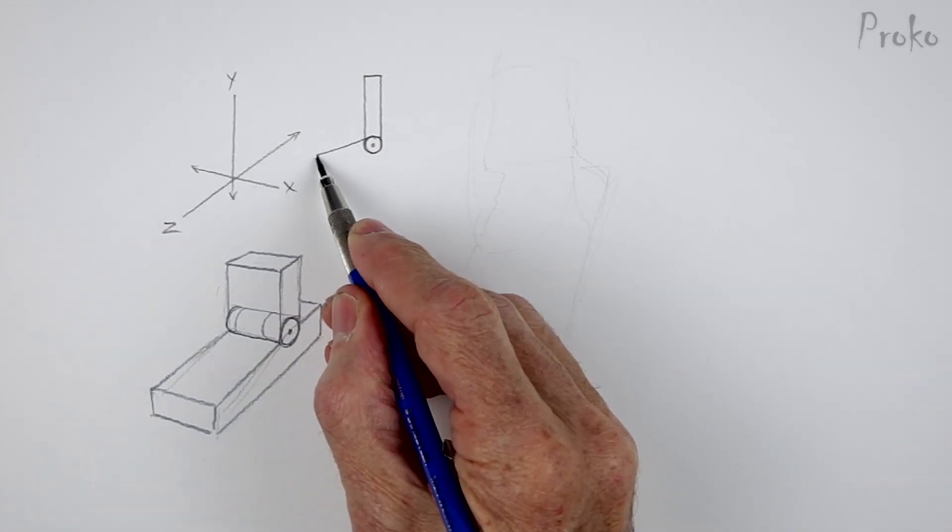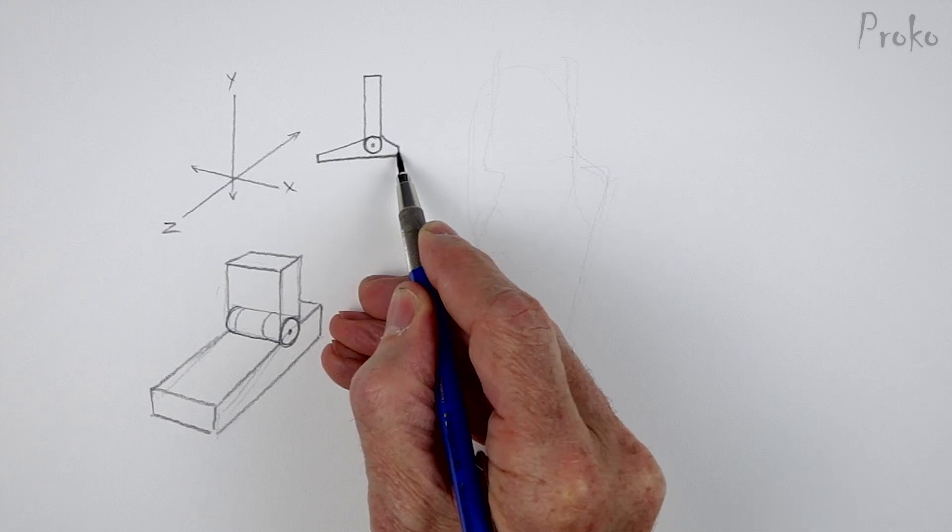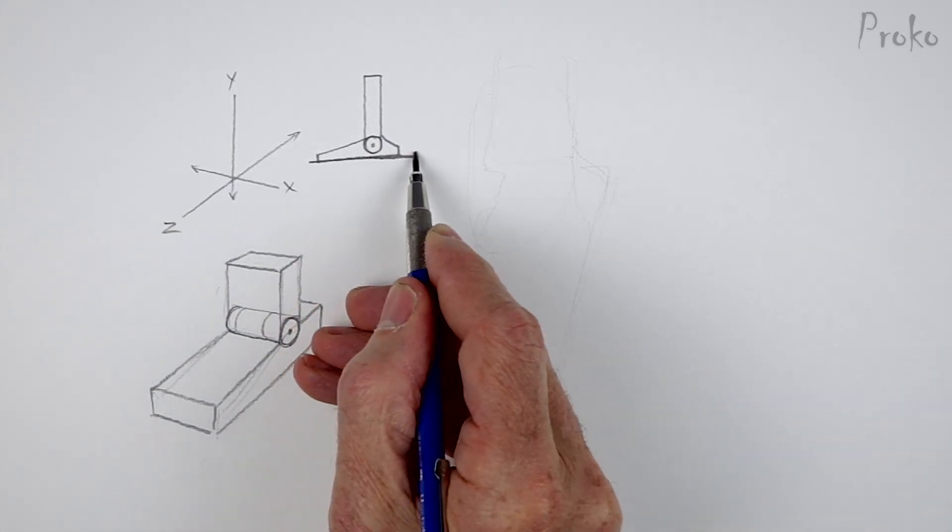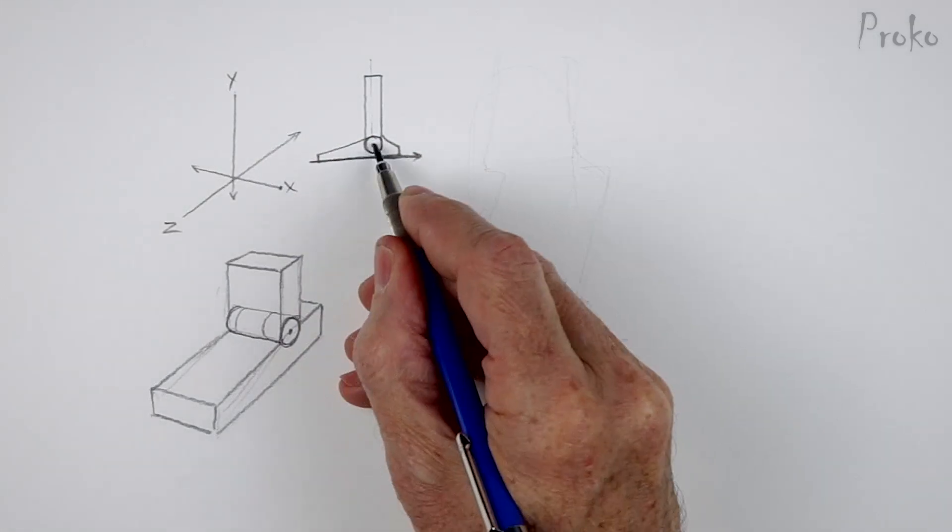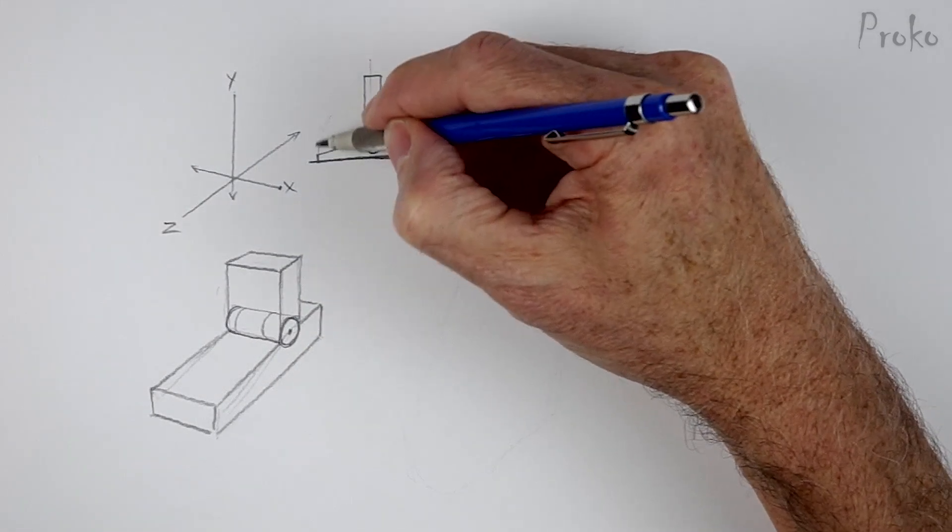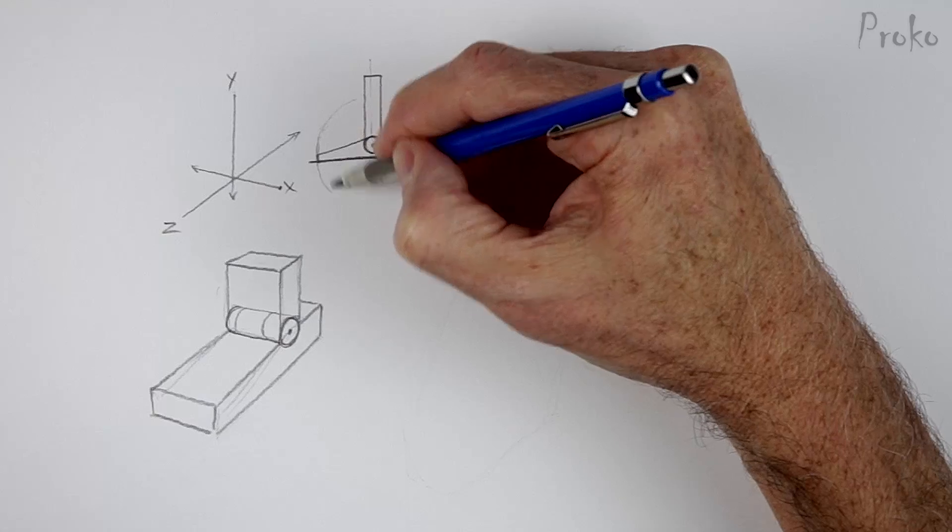If I draw it from the side, you'll see that we have the depth, that's the Z line. The height, that's the Y line. And then we're looking straight down on X, where that ankle joint is.